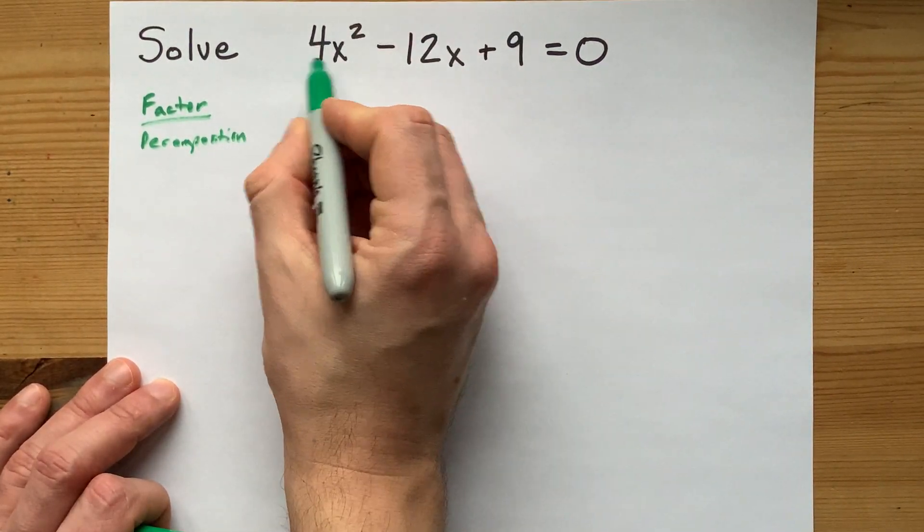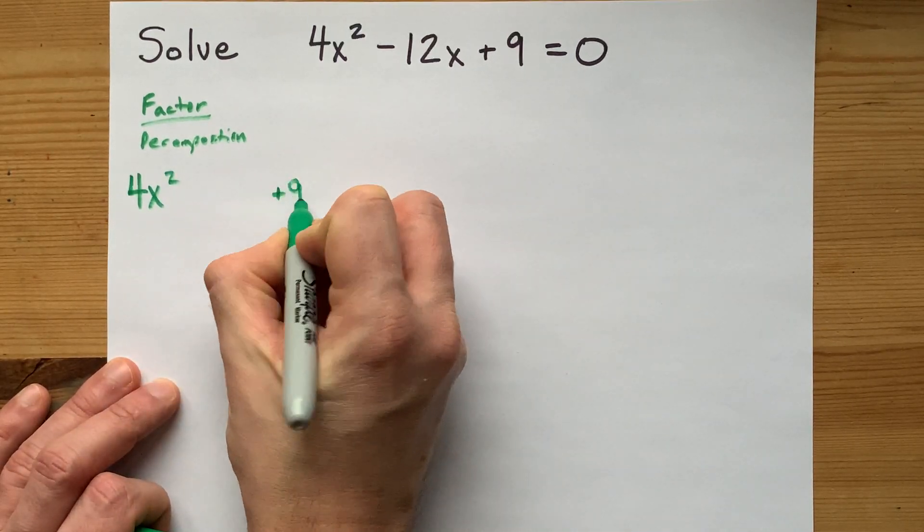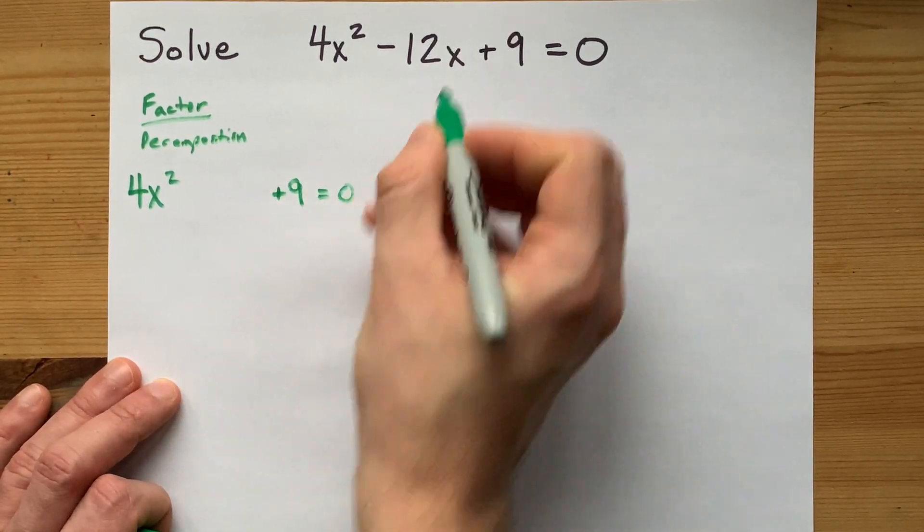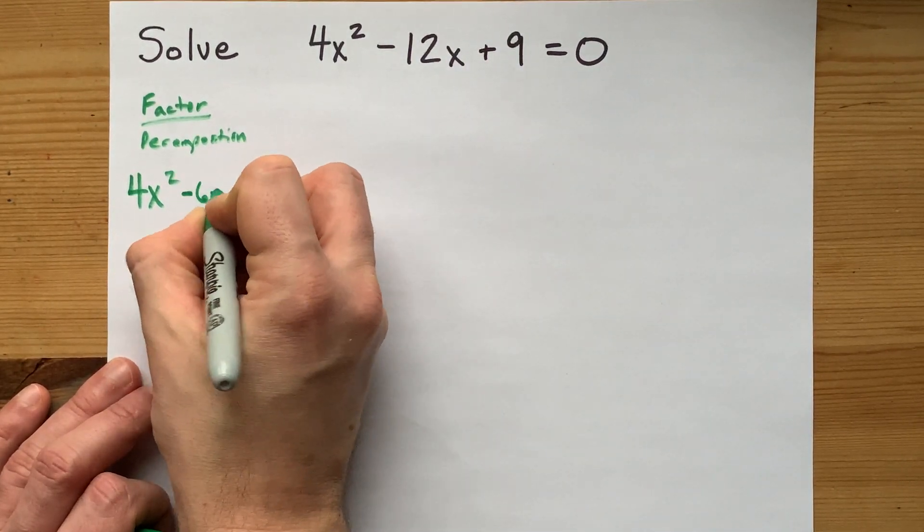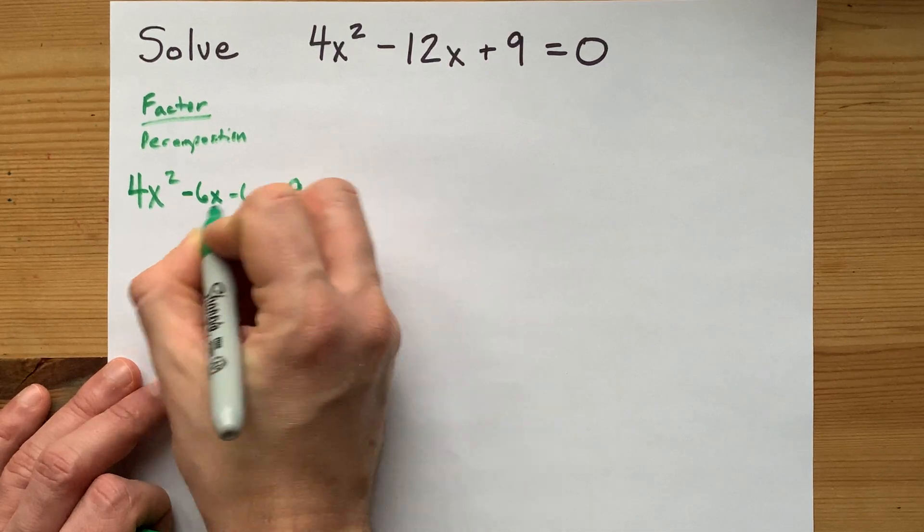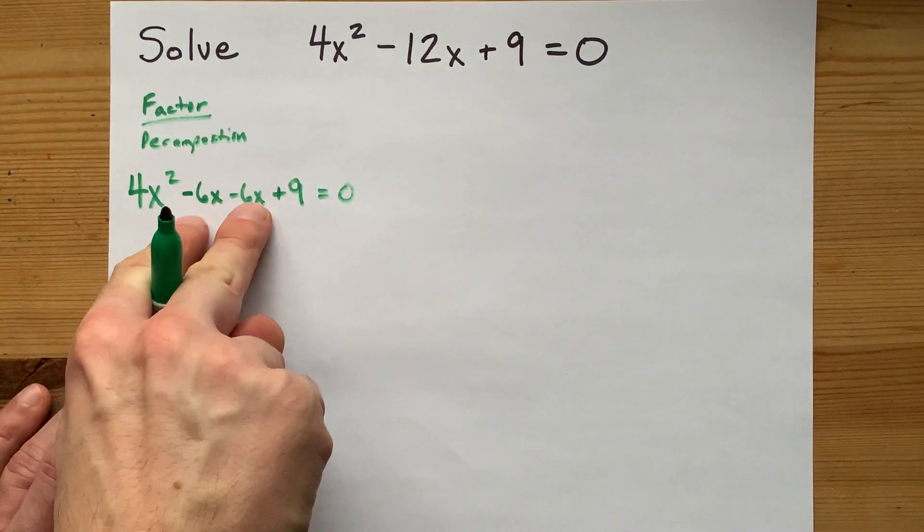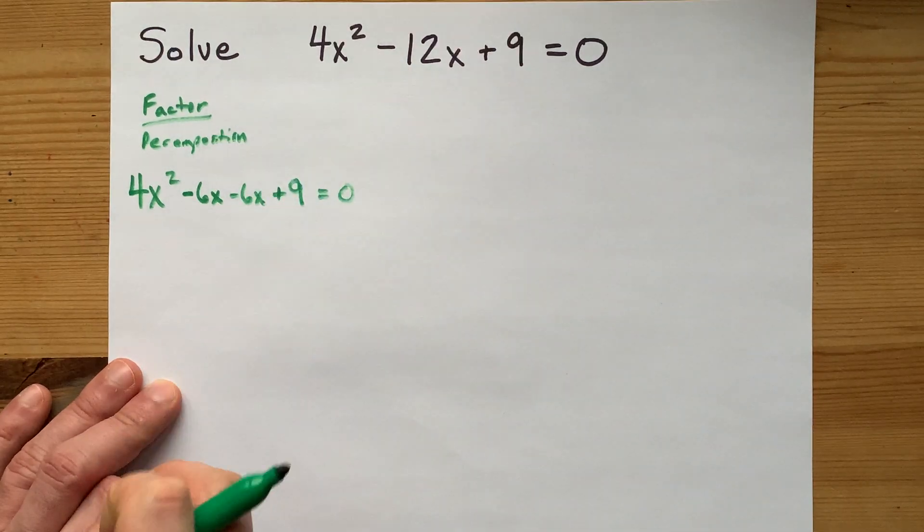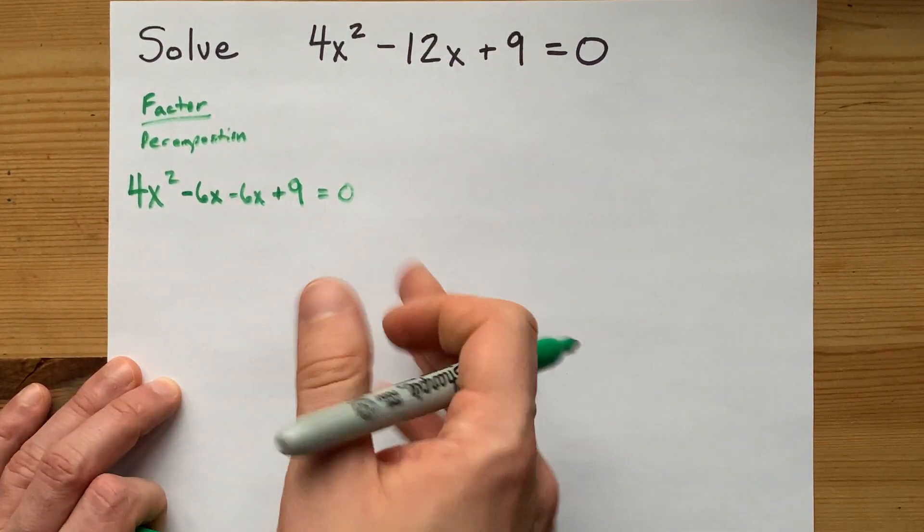From that point, I copy out my first term, 4x squared. I copy out my last term, plus 9. And I break my minus 12x into minus 6x and minus 6x. Those two together, it's tempting to combine those like terms and make the minus 12x, but we are decomposing it just so we can factor by grouping.